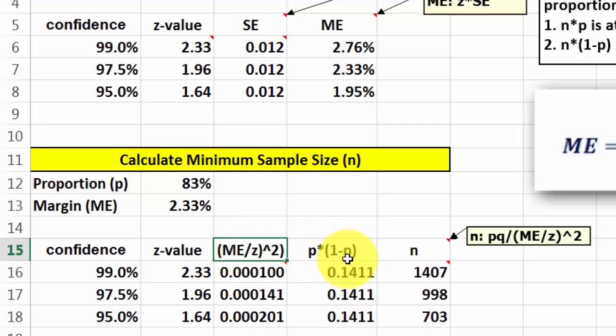Then we calculate p times q, or p times (1 minus p). And finally we calculate the number of cases. You could have solved this equation probably much quicker, but I am doing it in several steps. So that would be pq divided by (margin of error divided by z)^2. And this is the formula in this case. That would basically be D16, which is already p times q, divided by C16, which is basically that one.